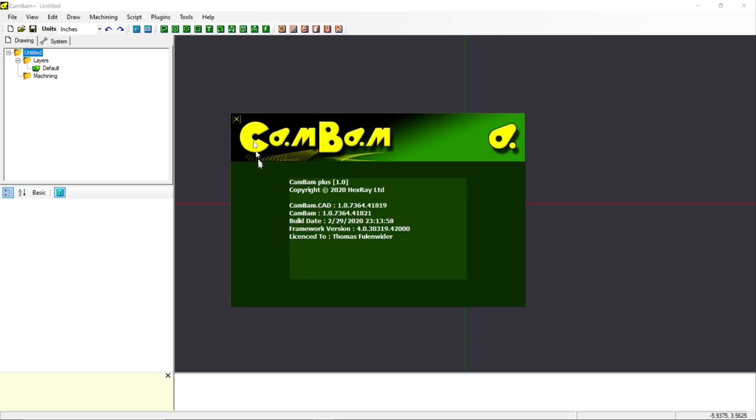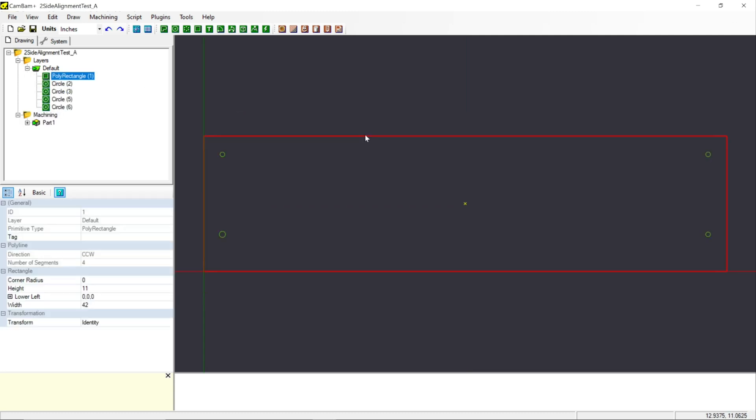I'm using CamBam as a CAM G-code generator because it is simple and straightforward and I'm not doing any fancy machining here. I start out with my 11x42 inch scrap board and I will bore four holes in it.